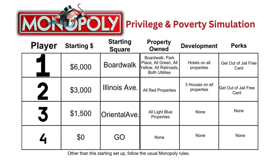Monopoly is that classic board game, and this is played with at least four people. Instead of every player starting the game at Go with $1,500 of Monopoly money and no property, you're going to draw lots for starting positions. Player one goes first and starts the game with $6,000. Player one begins the game on Boardwalk and already owns Boardwalk, Park Place, and all the green properties, all with hotels already on them at the beginning of the game. Player one also owns all the railroads and both utilities and one of the get-out-of-jail-free cards.